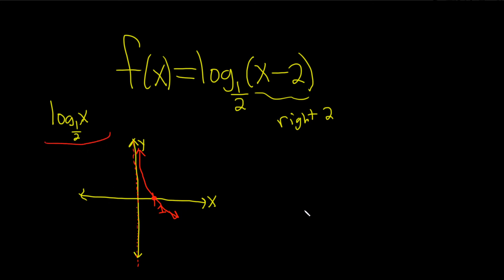So we're taking this graph and we're going to the right 2. So let's draw our new graph over here. So I like to move the asymptote.